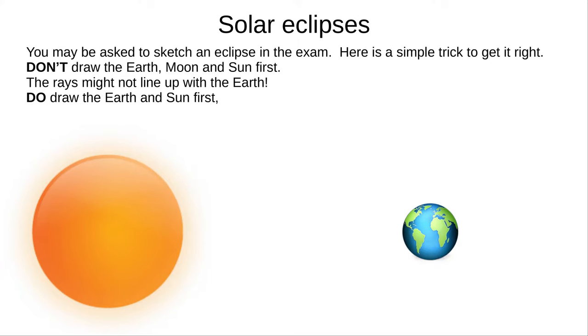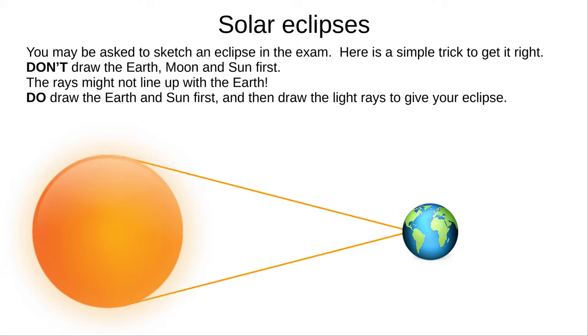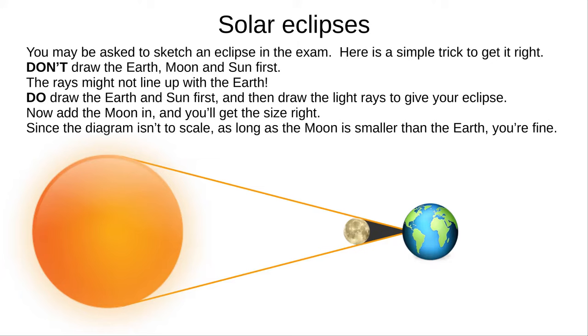Instead, draw the Sun and Earth first, and then draw the light rays. Now, you can add the Moon in to fit exactly within the rays. It's not to scale, so you can put the Moon anywhere that works. Just make sure that it's smaller than the Earth.